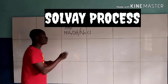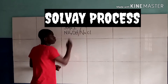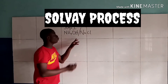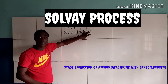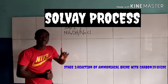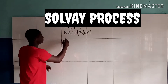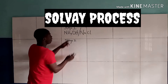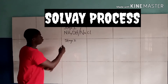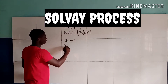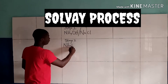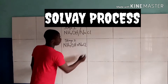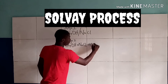The second stage of the Solvay process deals with the reaction of ammoniacal brine with carbon dioxide. So we get NH₄OH plus sodium chloride plus carbon dioxide reacting together in this second stage.